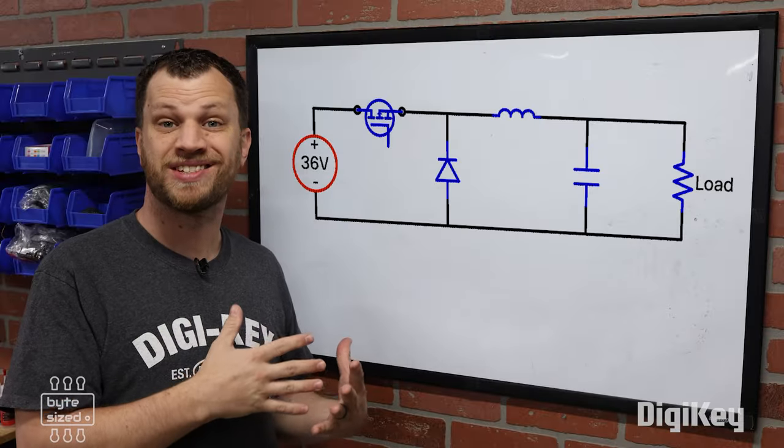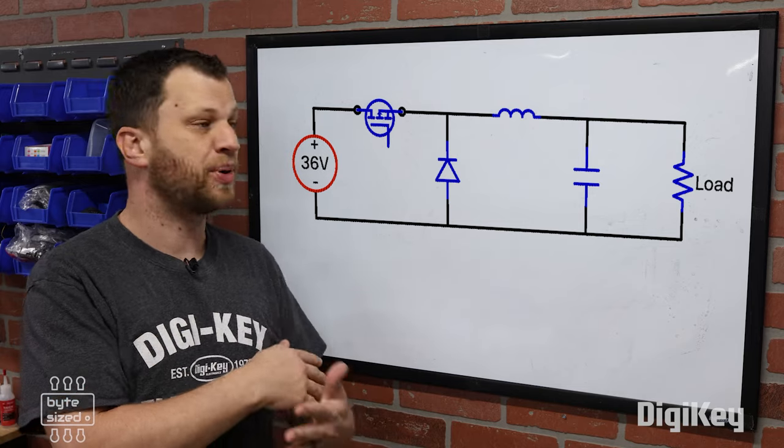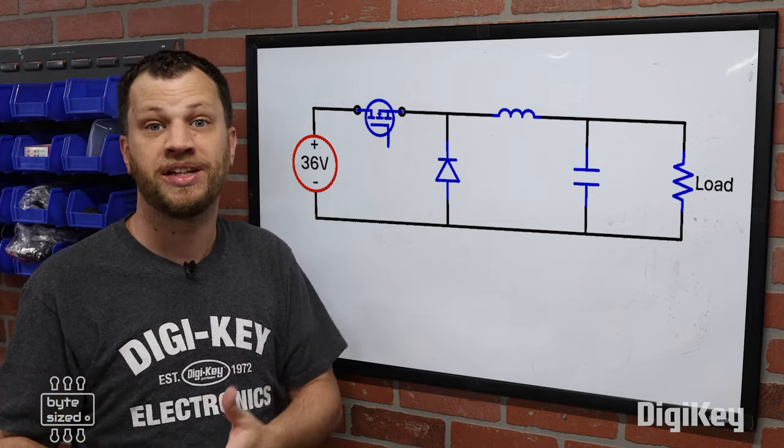By using a buck converter instead of a linear regulator, you can get efficiencies upwards of 80 or 90% as opposed to like 30 or 40% of a linear regulator.